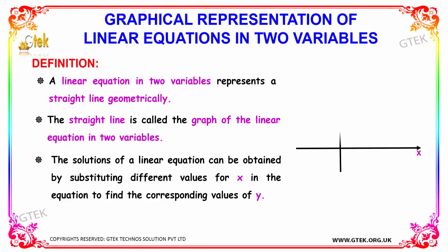A linear equation in two variables represents a straight line in geometrical terms. A straight line — or simply a line which is straight — is called the graph of the linear equation in two variables. The solutions of a linear equation can be obtained by substituting different values for x in the equation in order to find out the corresponding values of y.